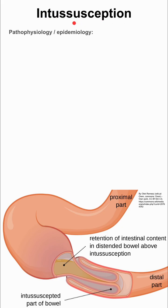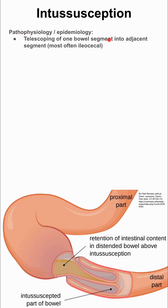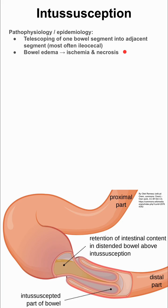Here are some notes on intussusception, starting with the pathophysiology and epidemiology. Intussusception is caused when one segment of the bowel telescopes into an adjacent segment, and it most often happens at the ileocecal junction. This results in bowel edema, which can lead to ischemia and necrosis.